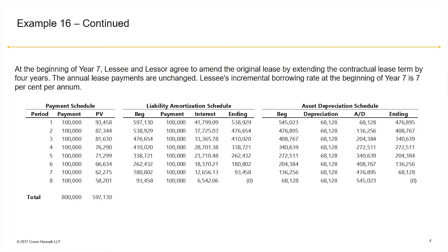However, the asset depreciation schedule does not equal the present value of future minimum lease payments. And later on we're going to review the calculation. But basically what is happening is the adjustment on the lease liability balance is what drives the value of the right-of-use asset either up or down.